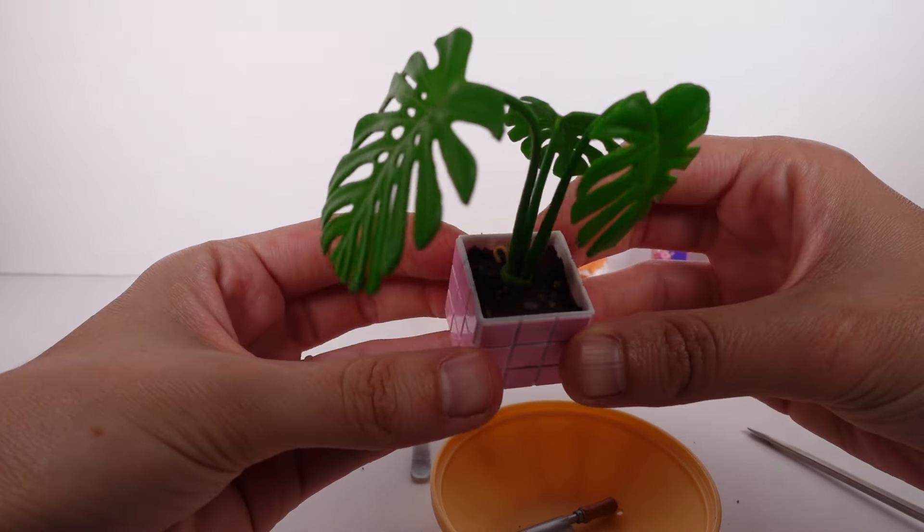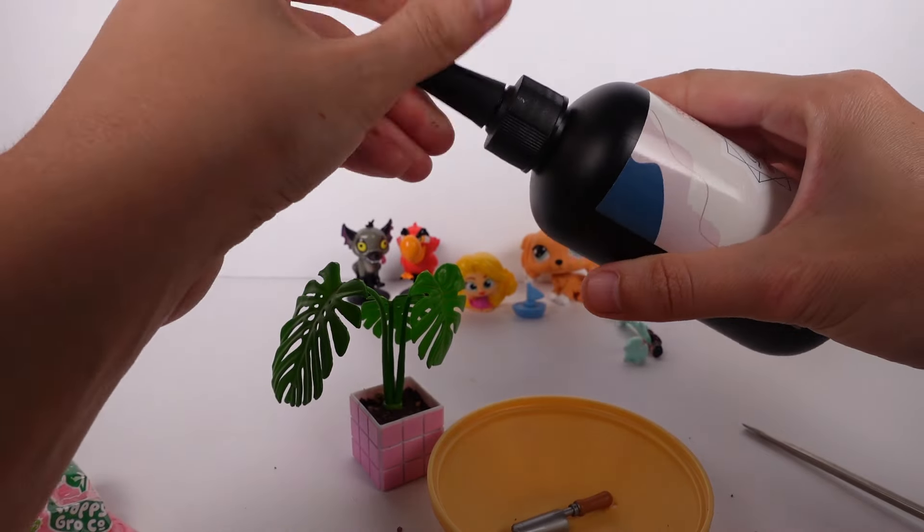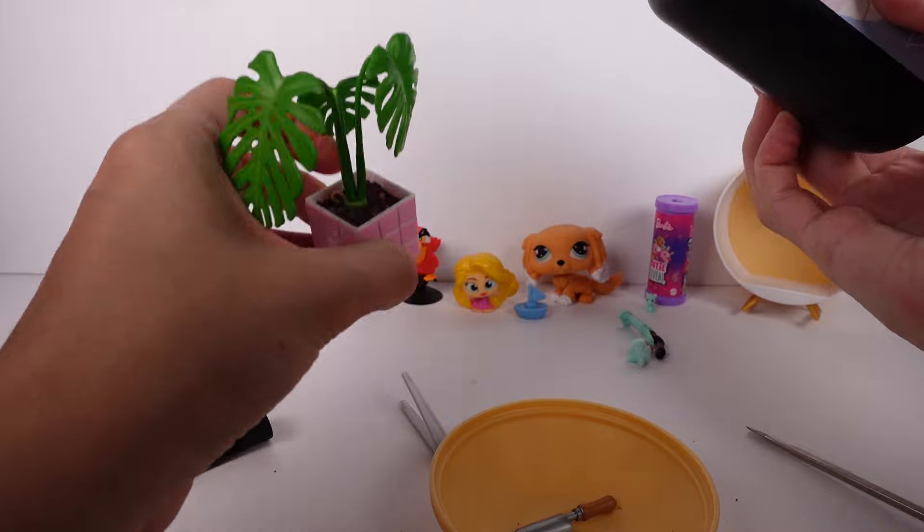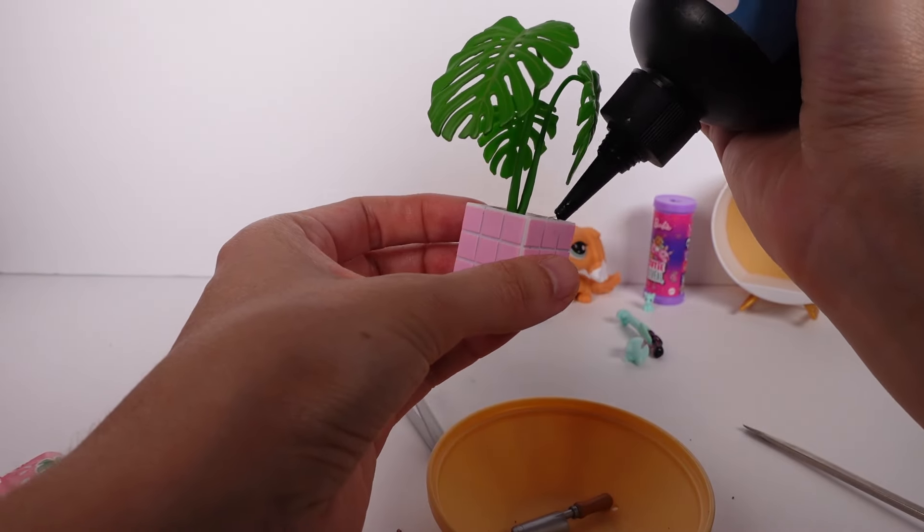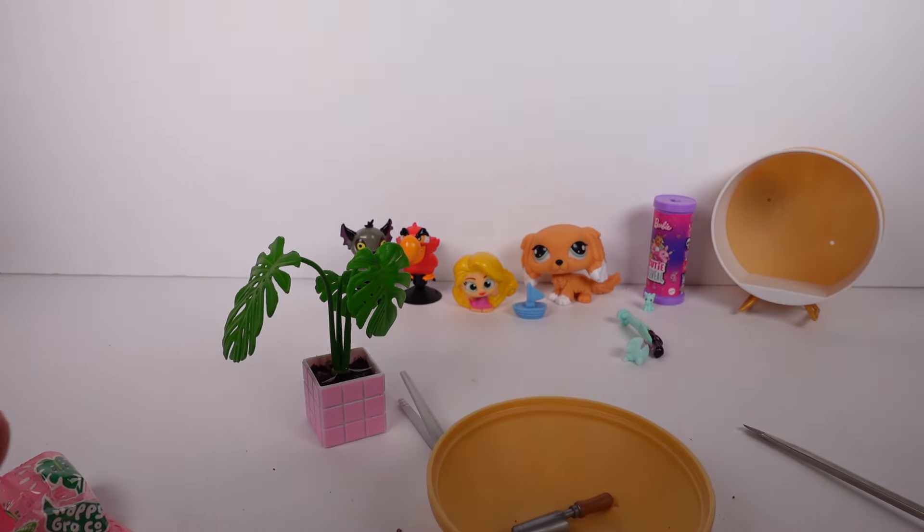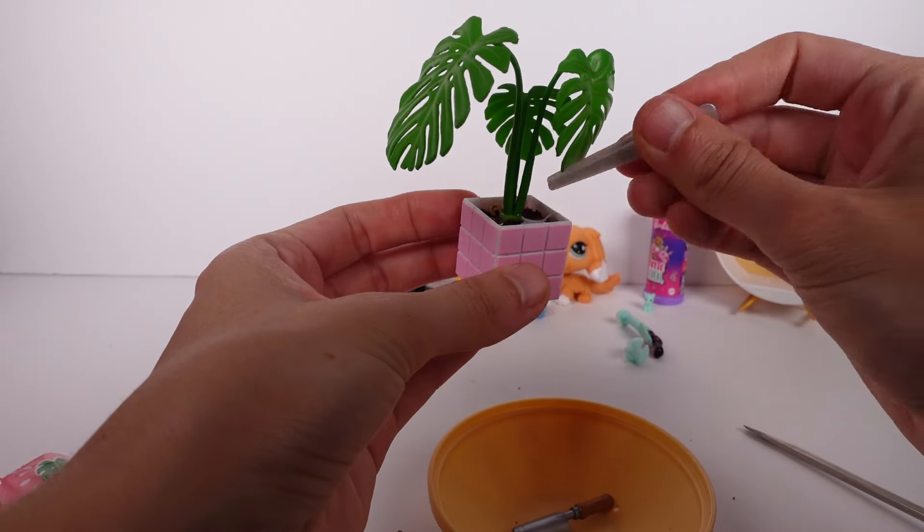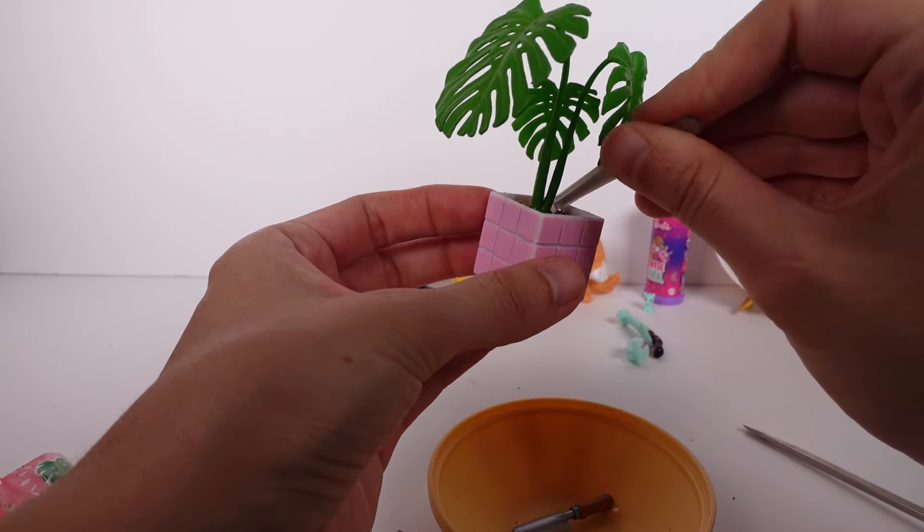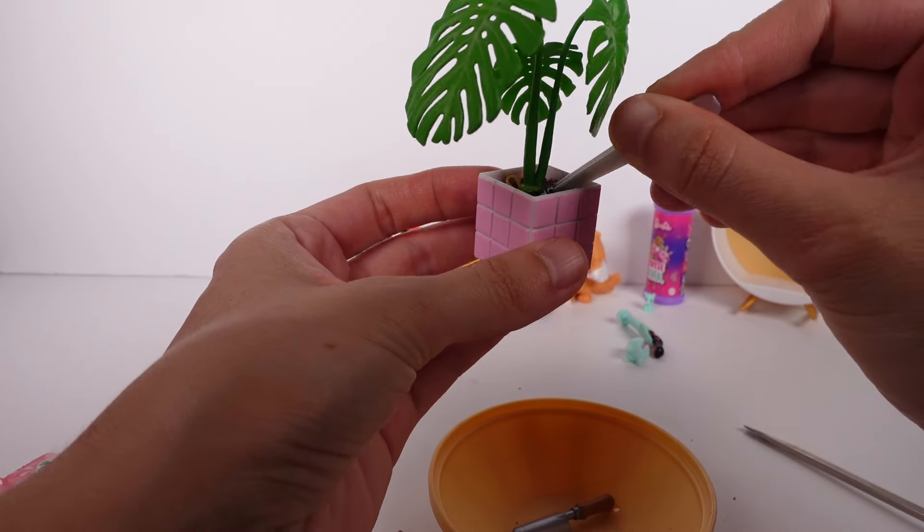All right, so that is the look right. And then what I will do is take some of my own resin or like I said if you have leftover resin you can do this and pour it on top. I don't want to do too much. And then it kind of looks like it's wet soil, like you had just watered it or something. So that's pretty cool.